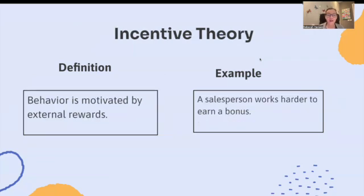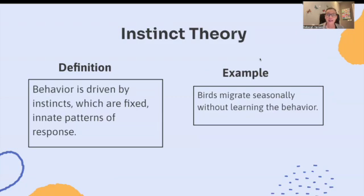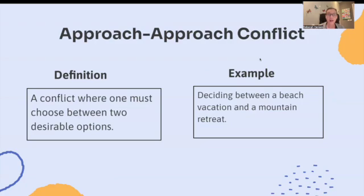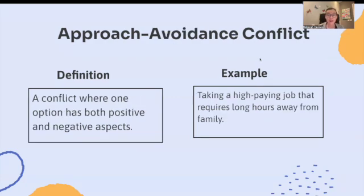Incentive theory: behavior is motivated by external rewards. For example, a salesperson works harder when they earn a bonus. Instinct theory: behavior is driven by instincts, which are fixed, innate patterns of response. For example, birds migrate seasonally without learning the behavior. Approach-approach conflict: a conflict where one must choose between two desirable options. For example, deciding between a beach vacation and a mountain retreat. Approach-avoidance conflict: a conflict where one option has both positive and negative aspects. For example, taking a high-paying job that requires long hours away from your family.